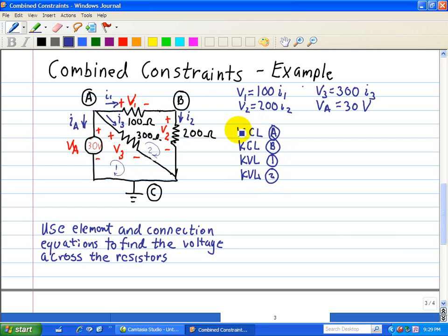So let's do the KCL at node A, we have the incoming current is equal to 0, which is equal to the outgoing current, which is IA plus I1 plus I3.